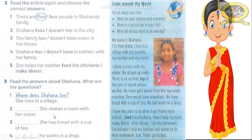Number two: the answer is she shares a room with her sister. Let's guess the question. Number three: she has bread with a cup of tea. So the question will be — what does she have for breakfast?